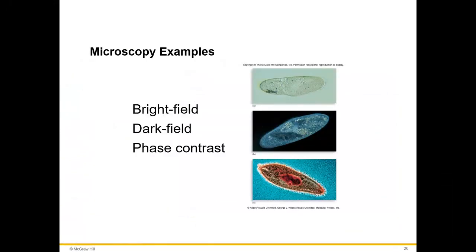Now I'm going to go through a few examples of different types of microscopes. Bright field microscopy: in bright field microscopy, the field or background is brighter than the organism. Here's a picture of bright field microscopy, and you can see the background is brighter in light than the actual organism. That organism appears darker.